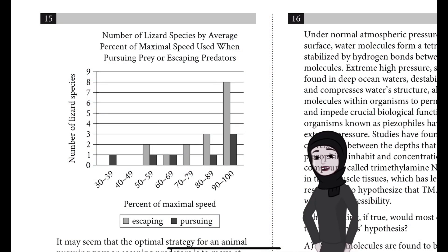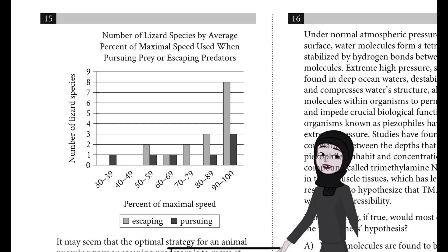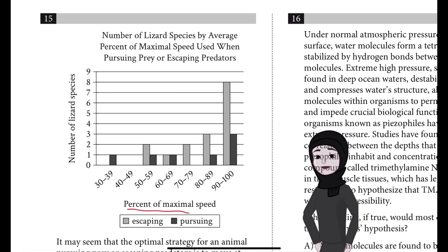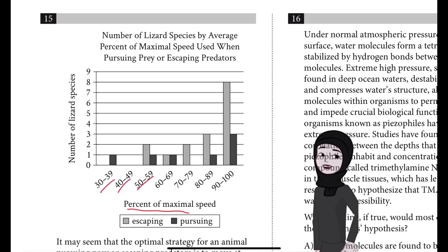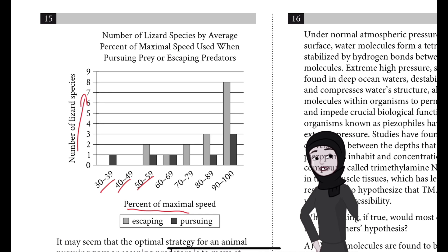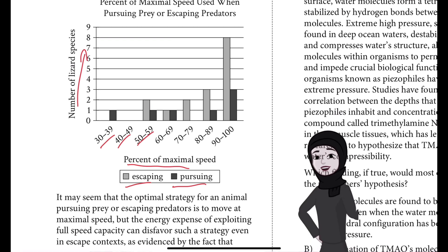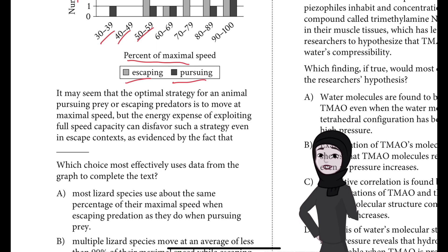Question number 15. This is a graph and the label given for the graph is 'Number of lizard species by average percent of maximal speed used when pursuing prey or escaping predators.' On the x-axis is percent of maximal speed — all these are percentages — and on the y-axis we have the number of lizard species. We see light gray and black: light gray is for escaping and black is for pursuing.